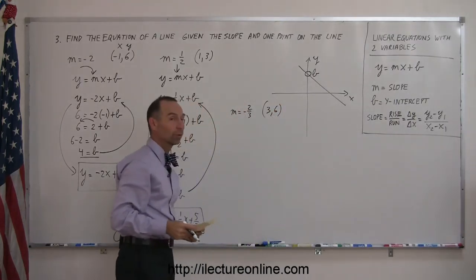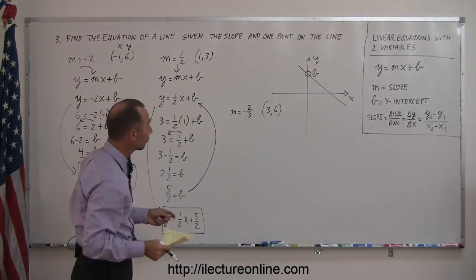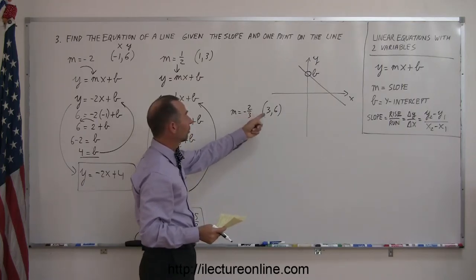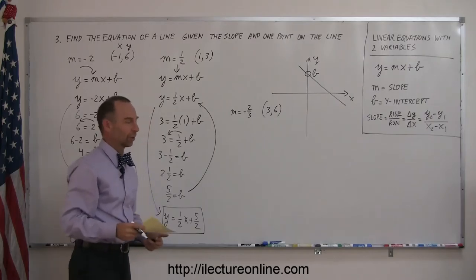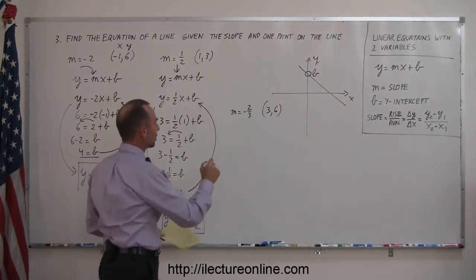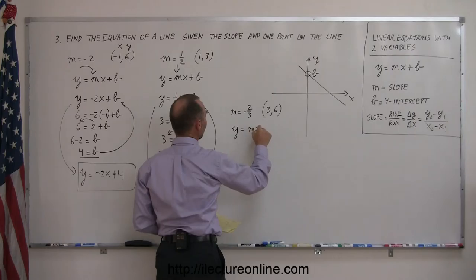Alright, so you're looking for a line, or an equation representing a line, where the slope is minus 2 thirds, and a point on the line is x equals 3, y equals 6. You know the equation has to look like this, y equals mx plus b.